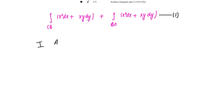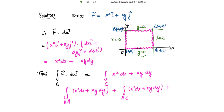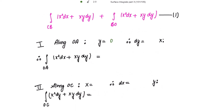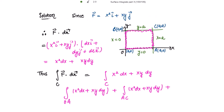Along OA, y=0, therefore dy=0 and x varies from 0 to a. So the integral becomes the integral of x² dx plus zero, with limits from 0 to a. This equals x³/3 from 0 to a, which gives a³/3 minus 0, so the integral along OA is a³/3.